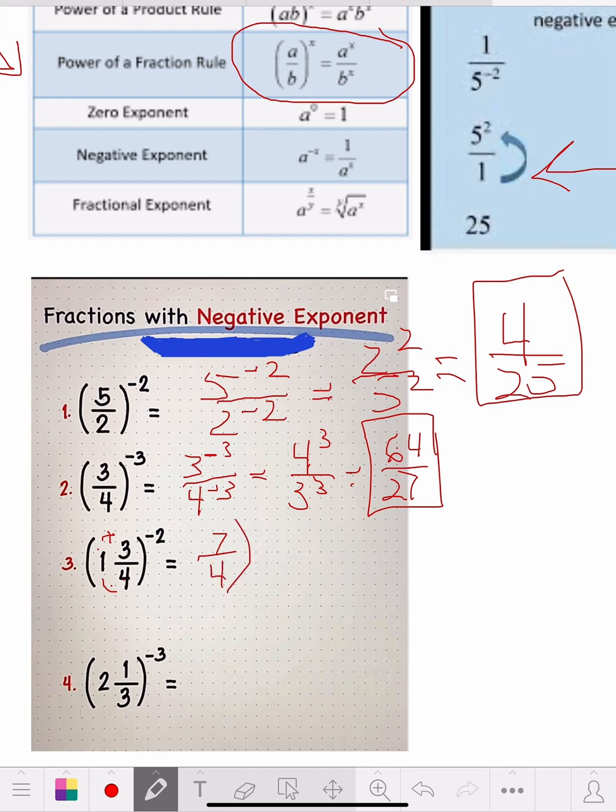So that equals, just like we did the other ones, equals 7 to the negative 2 over 4 to the negative 2. Equals, you flip it, you get 4 to the 2. 7 square equals 16 over 49. Look how quick we did this. And we get an answer.